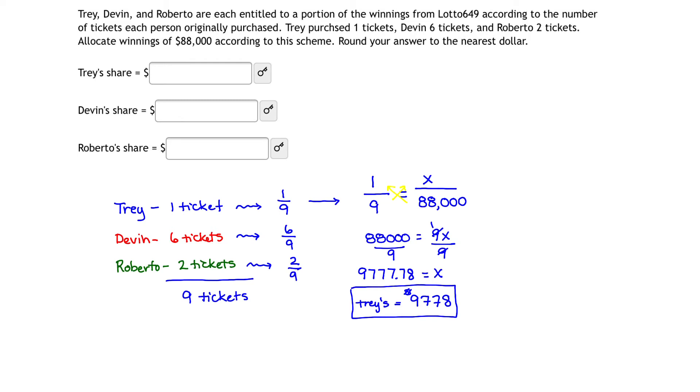We can proceed and calculate Devin with a similar proportion but this time, Devin has the relationship that he bought six winning tickets out of nine total and so we could write six is to nine as the amount he is entitled to win is to 88,000, or six over nine equals X over 88,000.